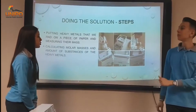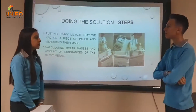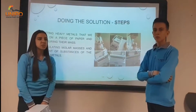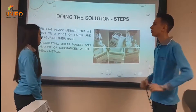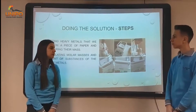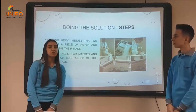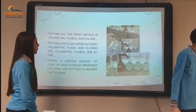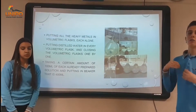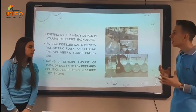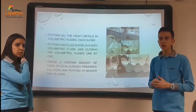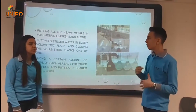Now we come to the solution part and the experiment. First, we take the amount of heavy metals and measure them on a scale. We did it as precisely as possible, and where needed we used a spatula. After that, we did some calculations — calculating their weight using their molar masses and amount of substances. Next, we measured each heavy metal and put them into volumetric flasks one after another. Then, to make a proper solution for further use in this experiment, we added distilled water to every volumetric flask.